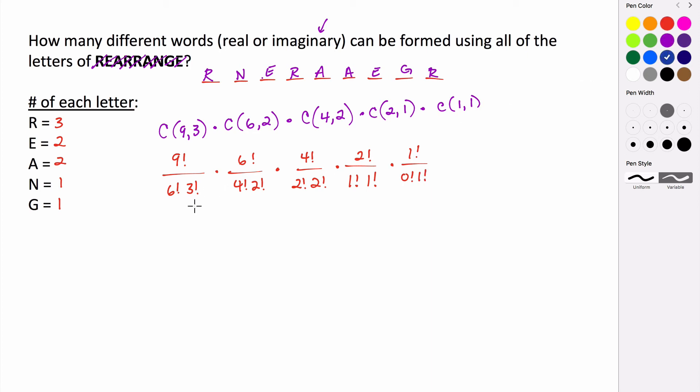And we actually get some canceling that can happen, right? We have this 6 factorial, and that will cancel this 4, and this 4 will cancel this 2 and this 2, this 1 and this 1, and we know that 0 factorial is just a 1. So when we rearrange this, in our denominator we have 3 factorial, then 2 factorial, 2 factorial, 1 factorial, and 1 factorial.